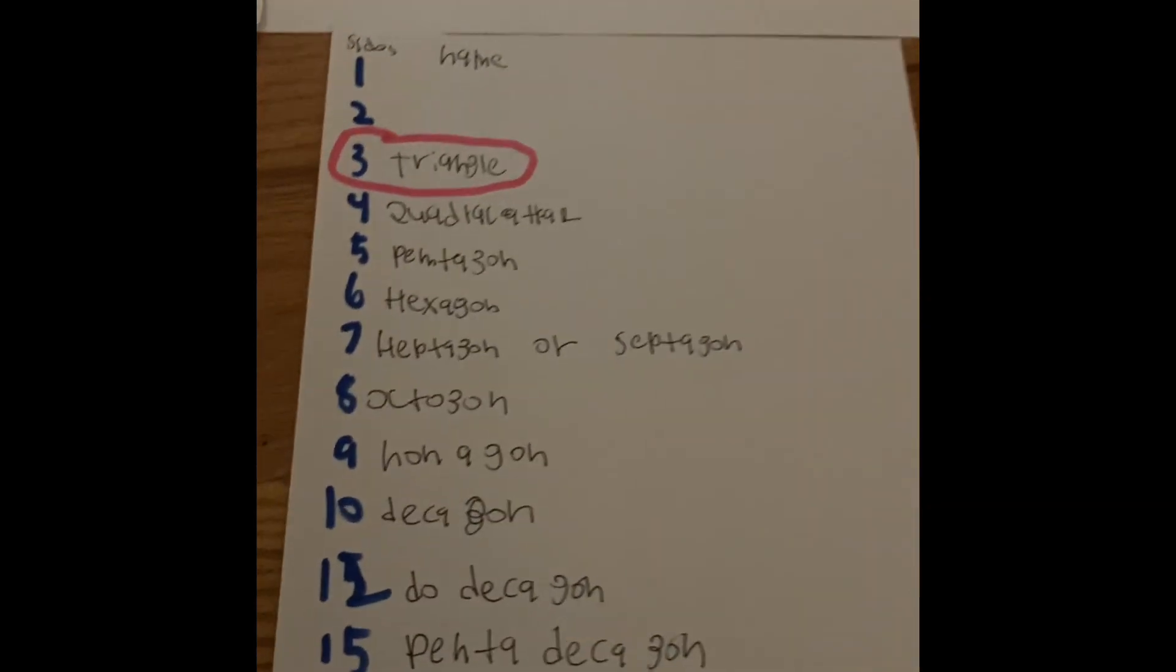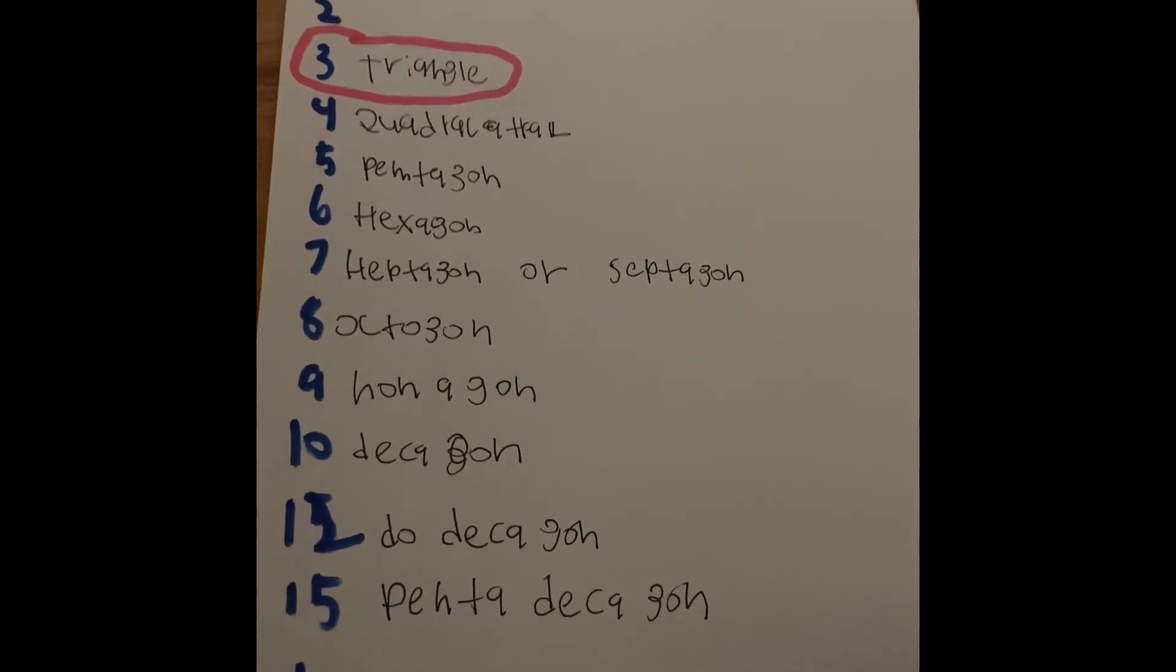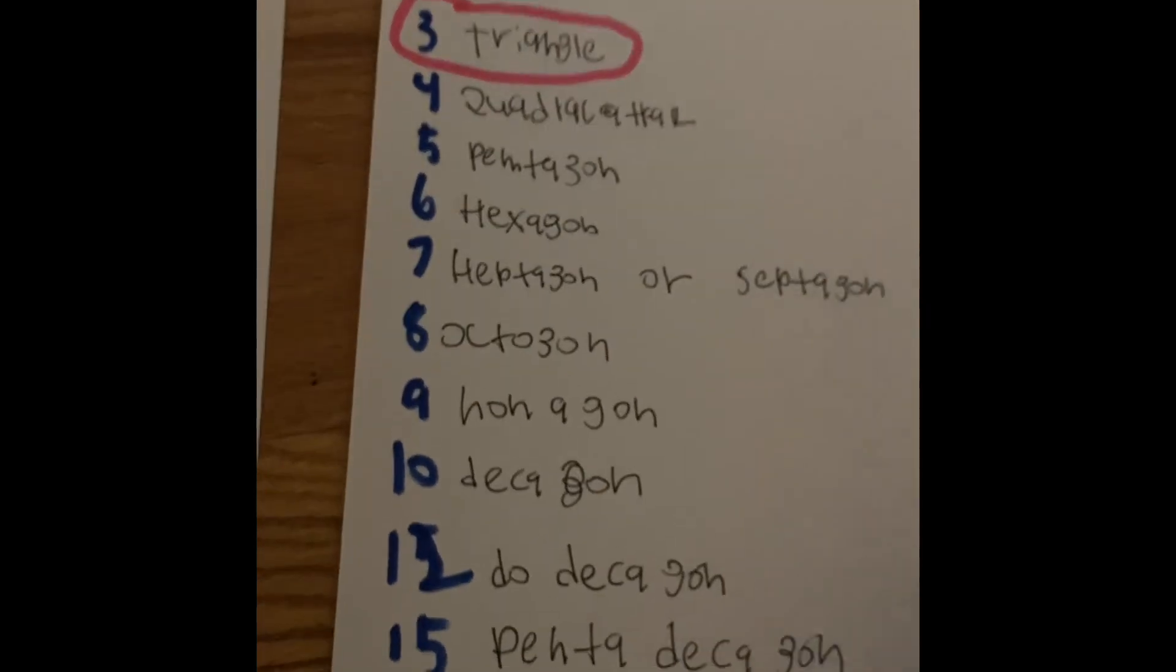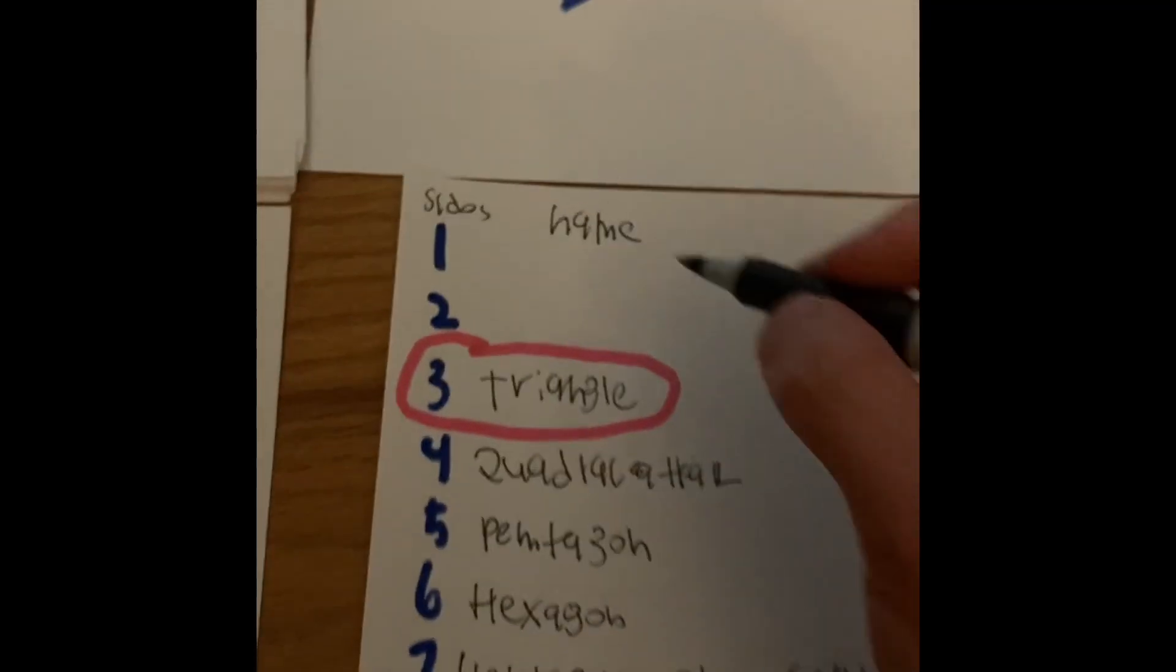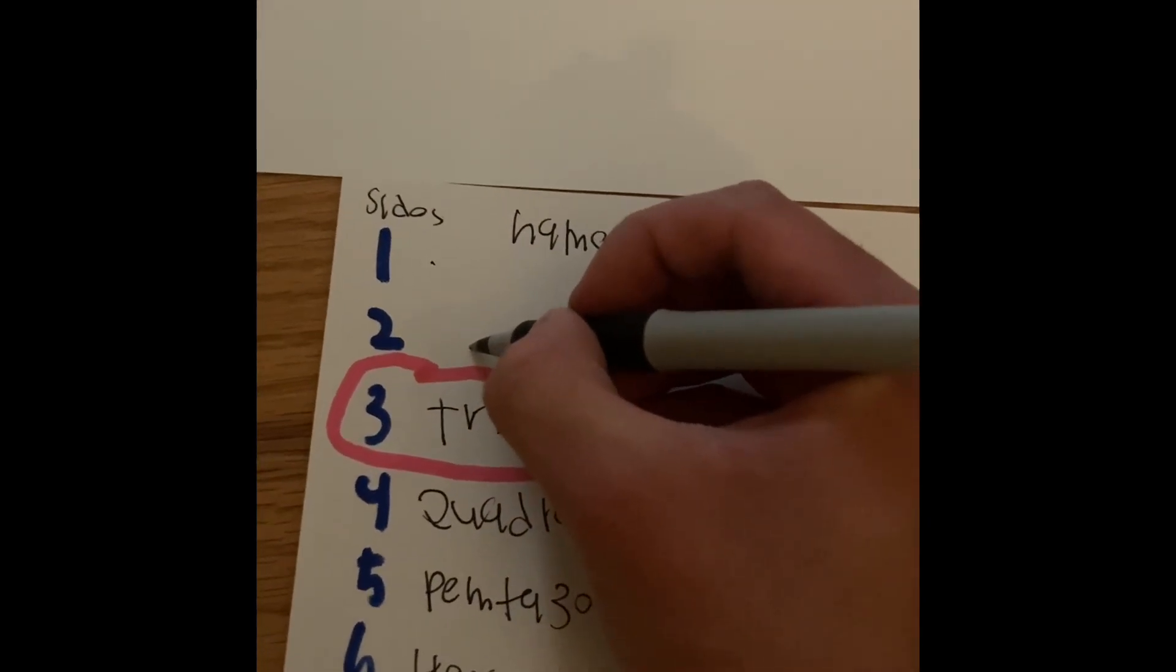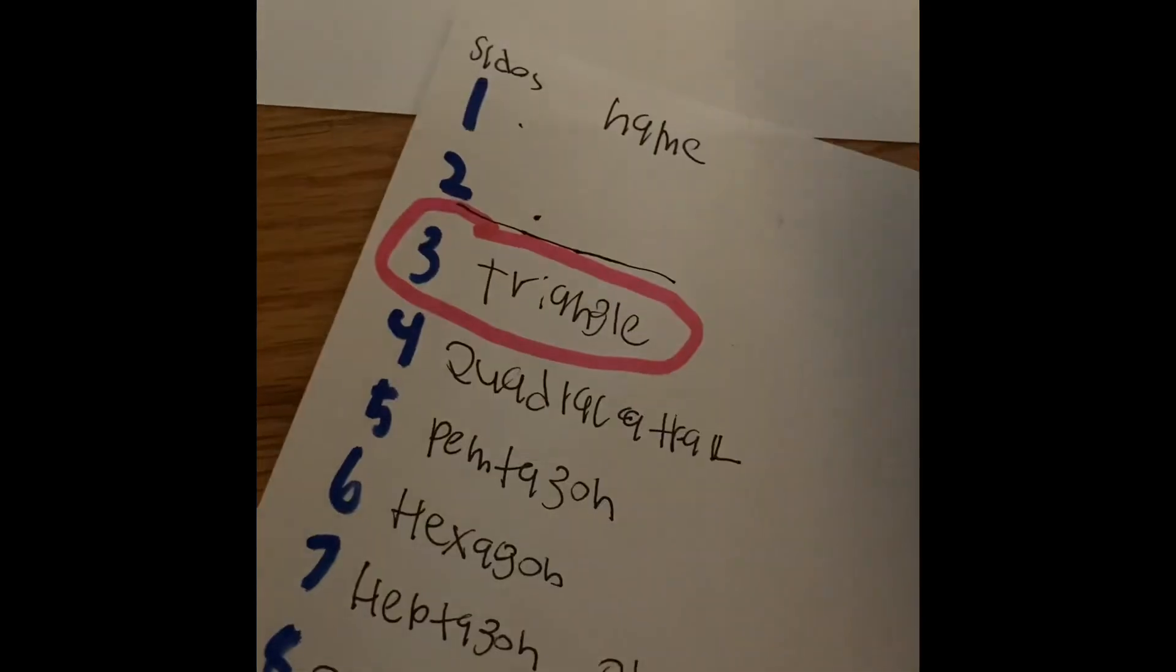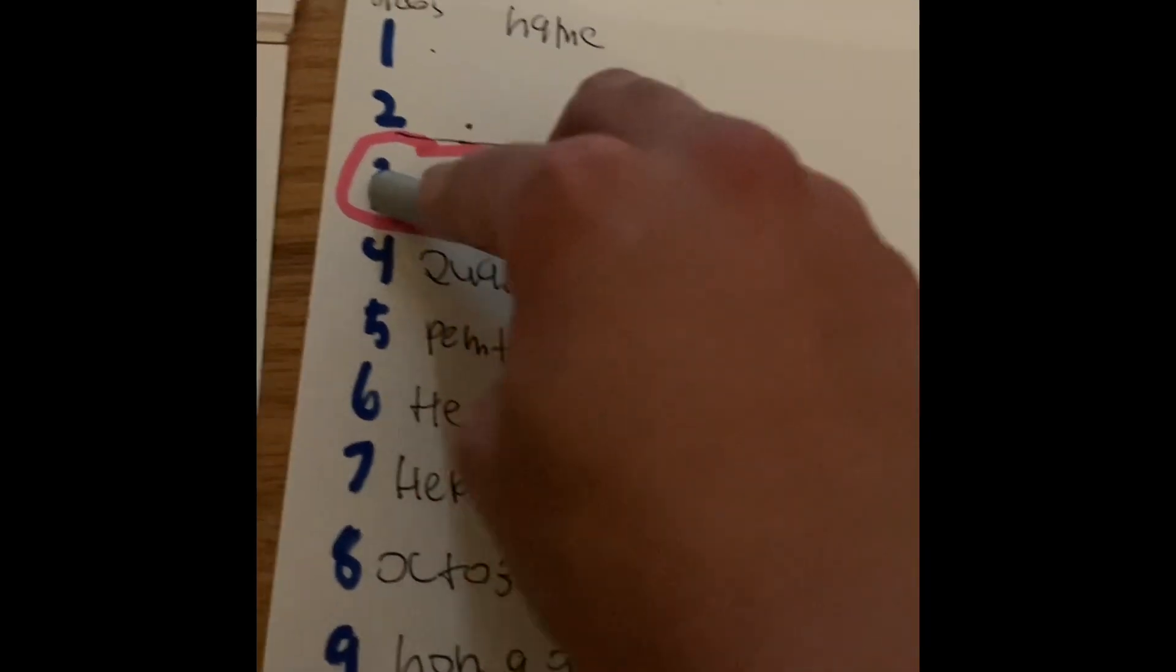So here is a list of all the different names of the shapes that we need to know. They are categorized by the number of sides they have, and they also have the name. For example, one and two-sided shapes are not polygons. Anything that's three or more can be considered a polygon. Like, triangles is a three-sided shape.